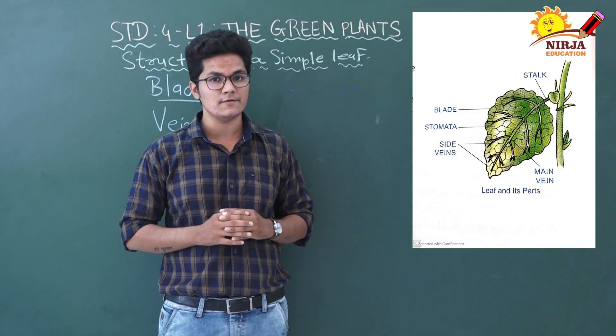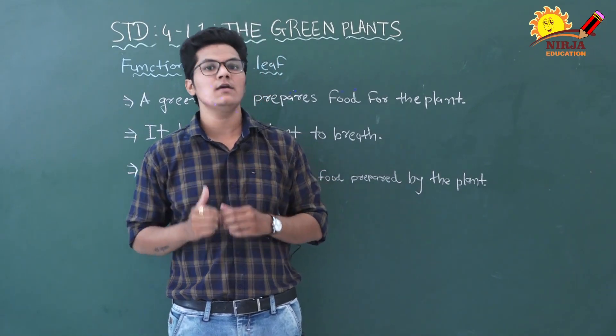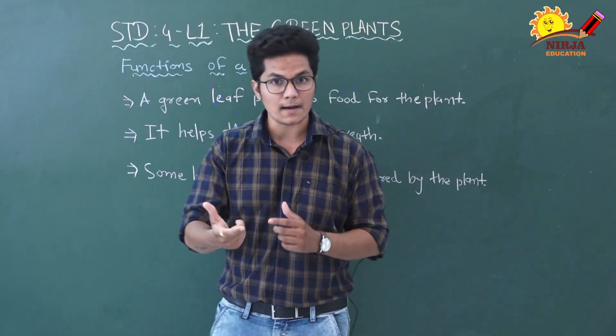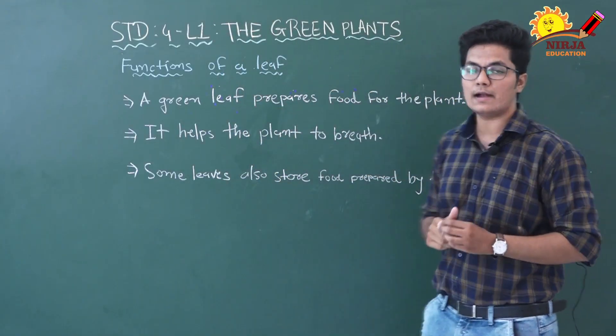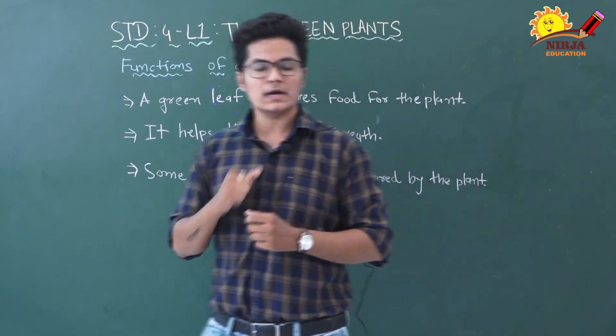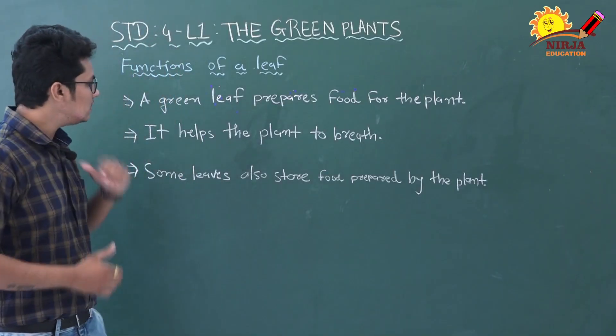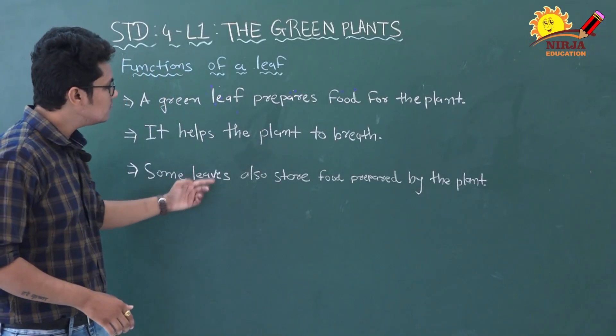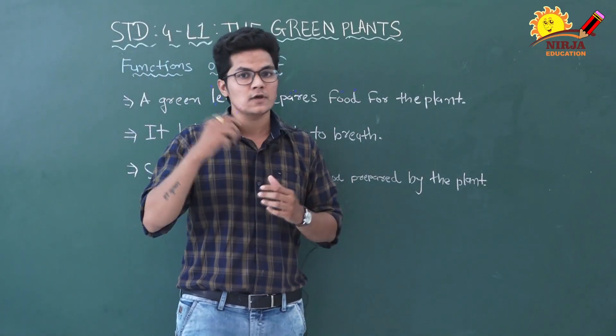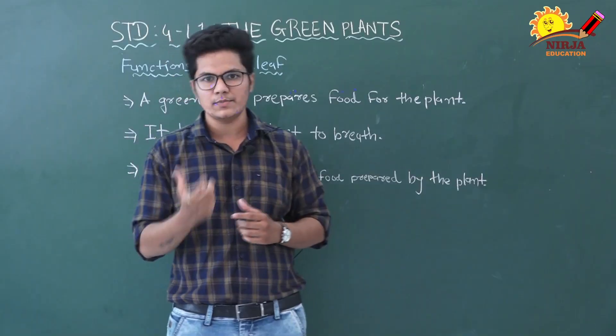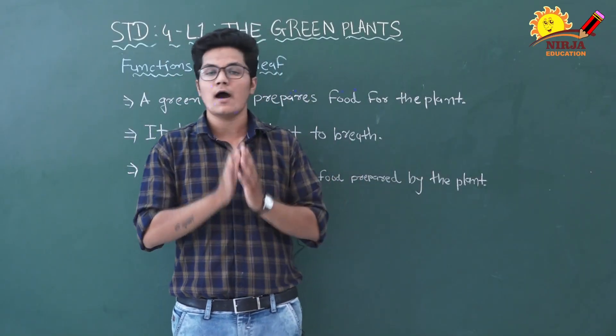Now let's see functions of a leaf. A green leaf prepares food for the plant. It helps the plant to breathe. And some leaves also store food prepared by the plant so they can use it later. These are the functions of a leaf.